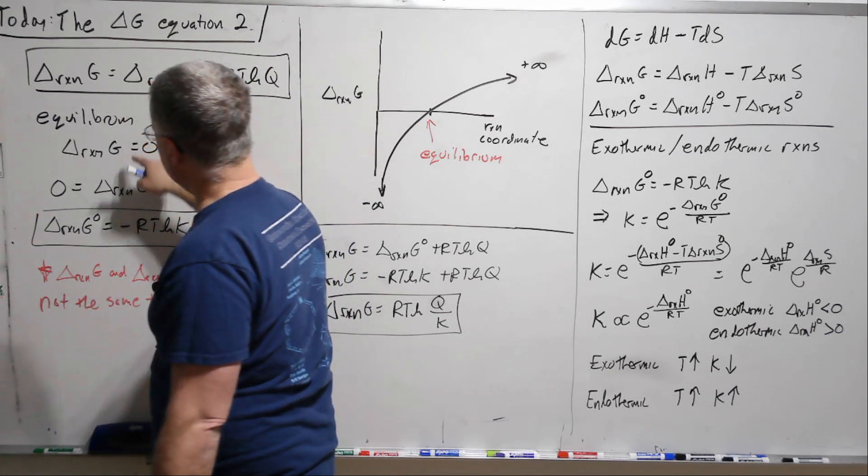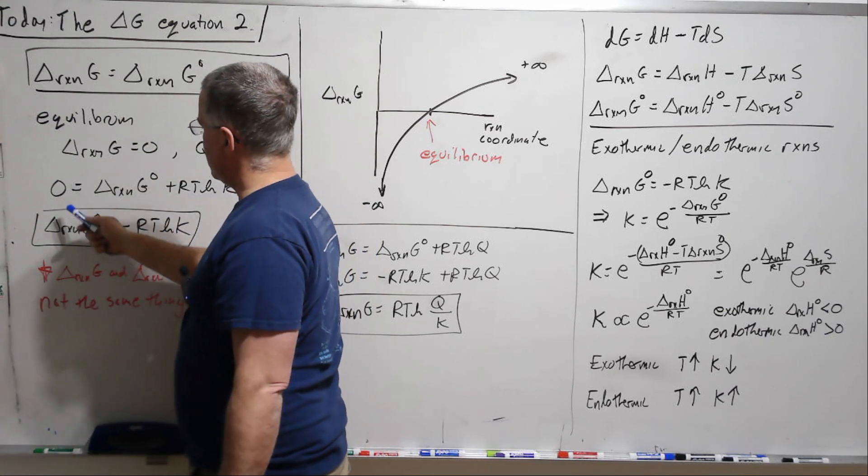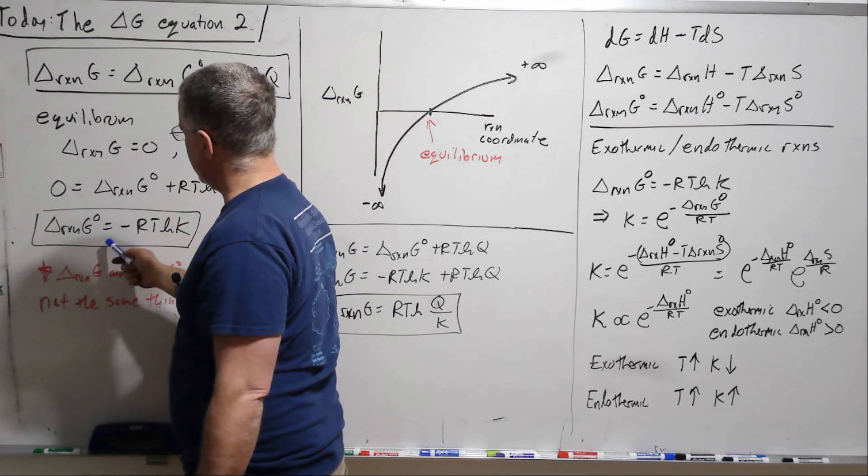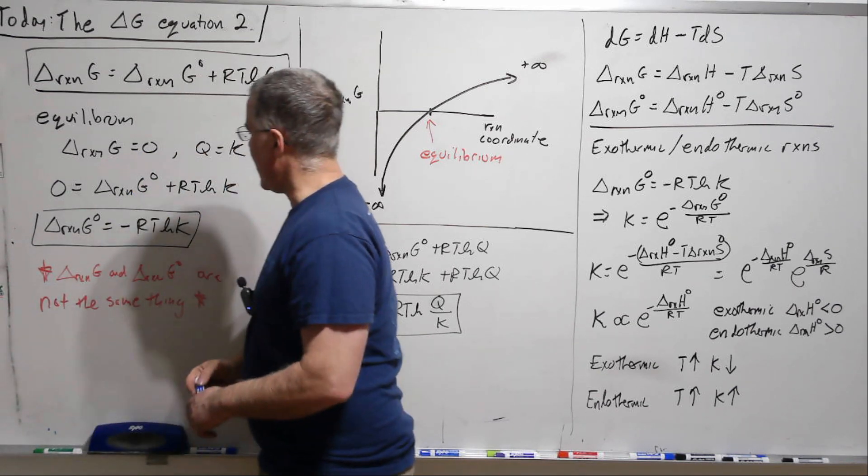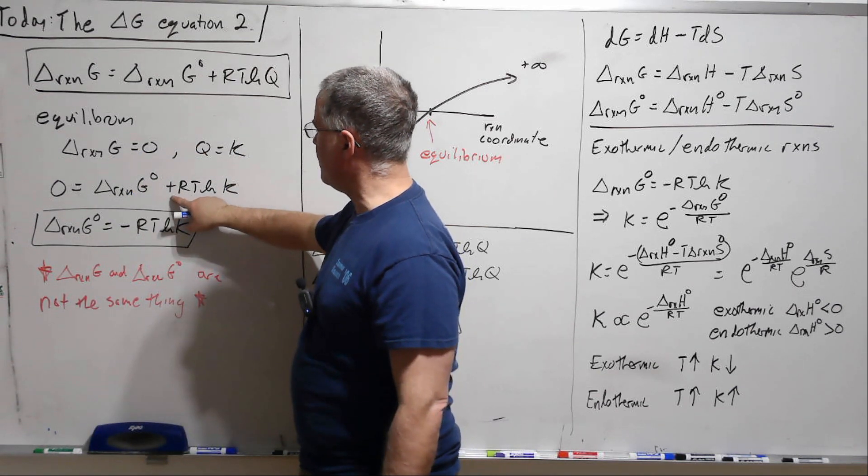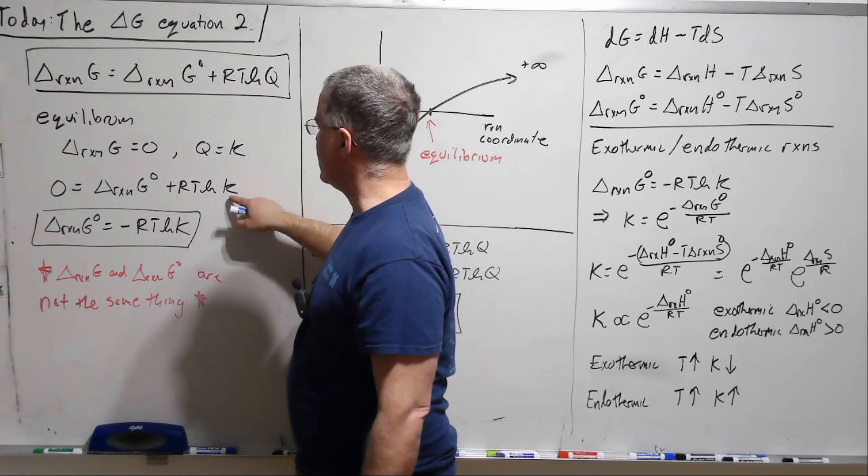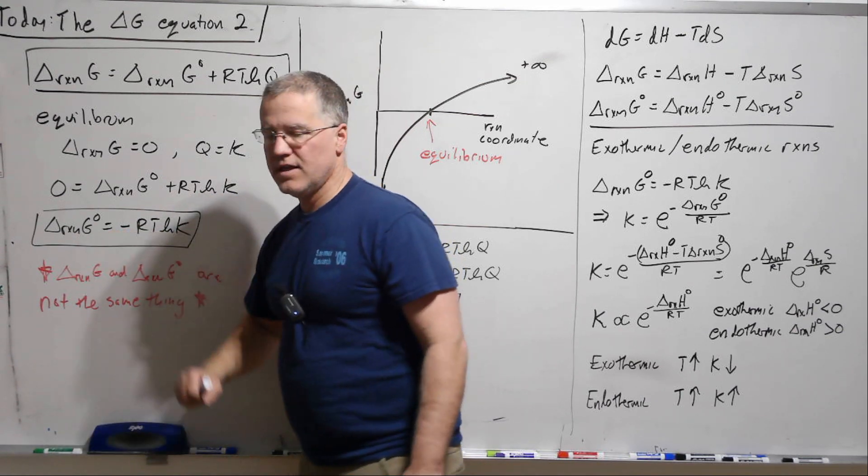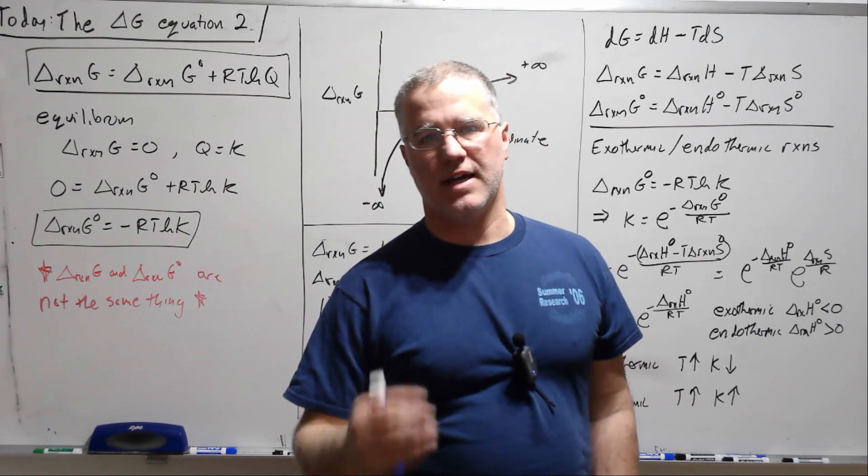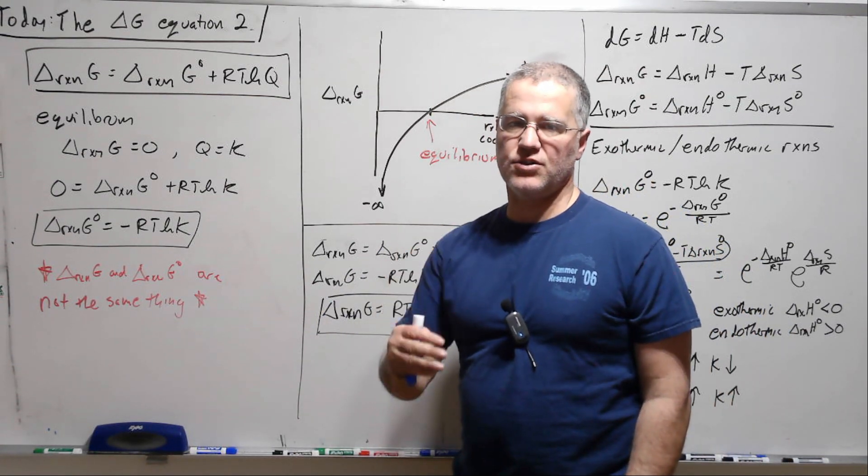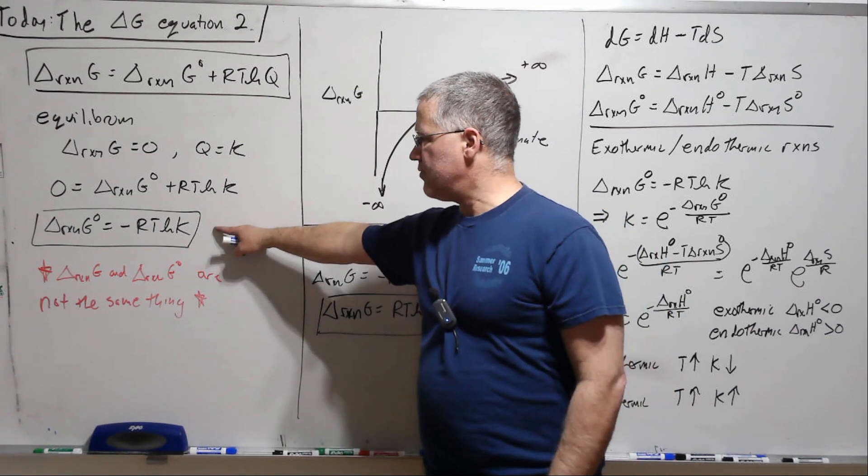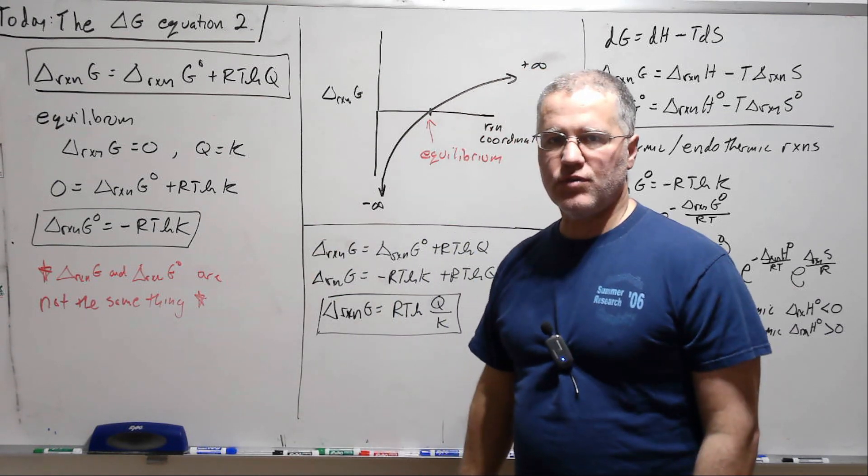So let's see what happens here to this equation. We plug in zero, we get Delta reaction G standard plus RT ln K equals zero. So we get a very important equation that the standard Delta G reaction is related to the equilibrium constant.